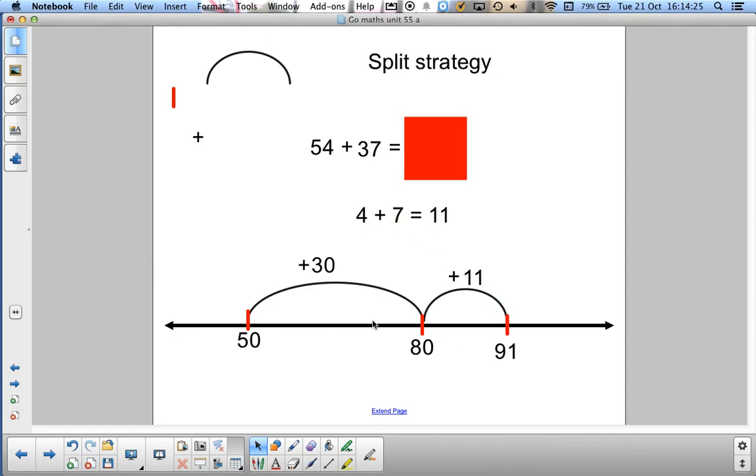So just recapping that. We started at 50 because of the five tens in 54. We jumped 30 because of the three tens in 37. We landed on 80. And then the next jump is a combination of the 4 and the 7 added together to equal 11. So 80 plus 11 equals 91. And that's an example of the split strategy.